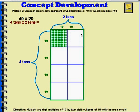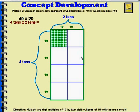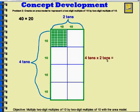So the area of each square is 10 times 10 — this one, and this one, and this one, and this one, and this one, and this one. 4 tens times 2 tens would be 100, 200, 300, 400, 500, 600, 700, 800. So 4 tens times 2 tens is equal to 8 hundreds.